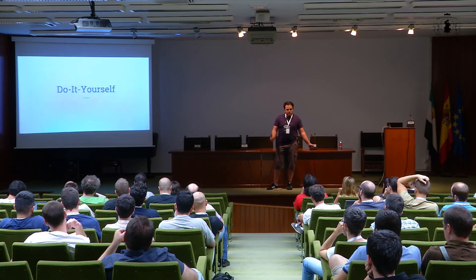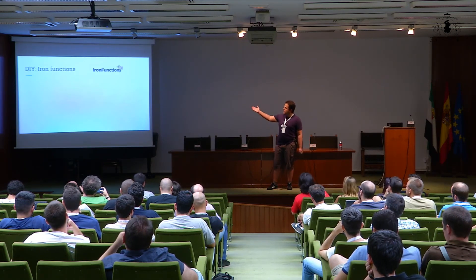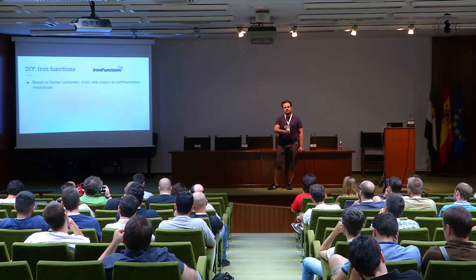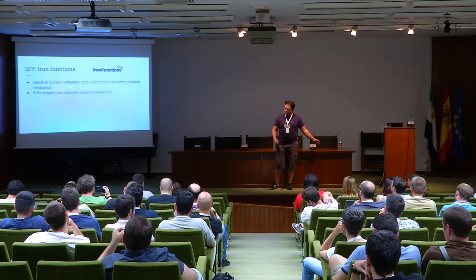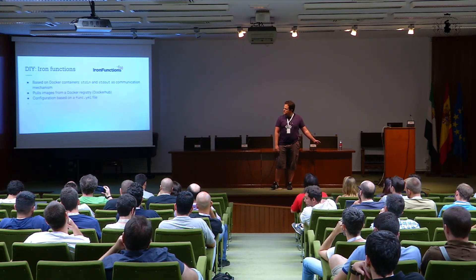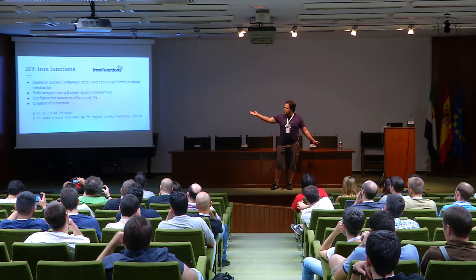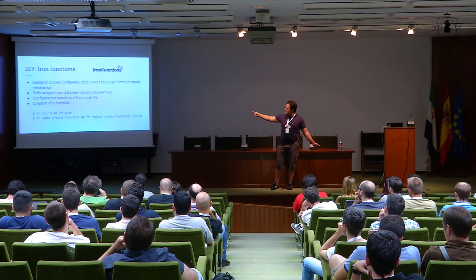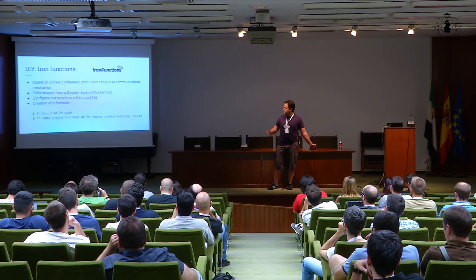Now for a brief view of the do-it-yourself alternatives. We can use Iron Functions, which is free software based on Docker containers — it uses standard input and standard output as the mechanism of input and output for your Lambda functions. It uses images from Docker Hub, and the idea is to have a YAML file describing your function and the entry point, so that with the CLI you can create your containers, push them, create apps, and create routes. In the repo you will have instructions and ways to play with it.